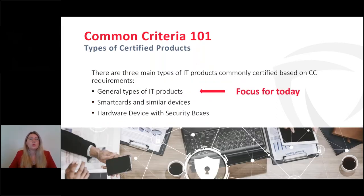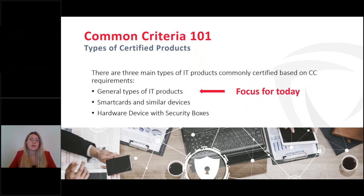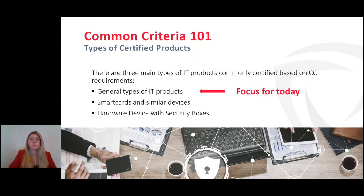What types of products can you certify based on Common Criteria? Generally speaking, there are three main types. First, general IT products — software or embedded products — which is our focus today. Second, smart cards and similar devices. And third, specific hardware devices with security boxes.